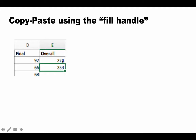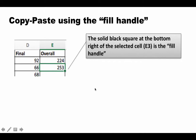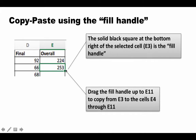Any currently selected cell will have the fill handle. All you have to do is drag the fill handle to wherever you want to copy—click, hold, and drag it down. It copies from the source cell and pastes into all areas you traverse. Dragging from E4 to E11 pastes the formula to all of them, and because the addresses are relative, it pastes the correct formula for each cell.